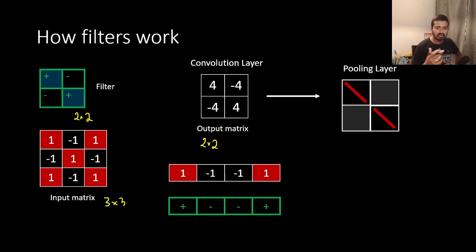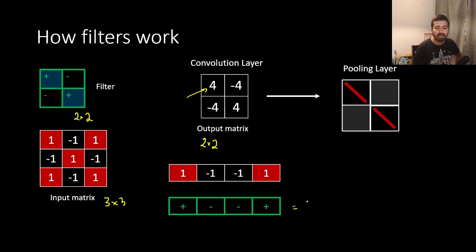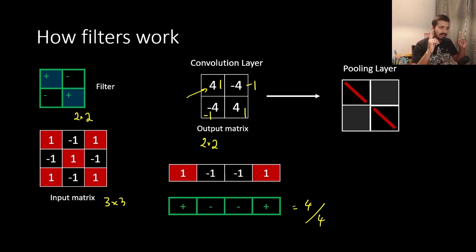For example, in computer science, the number of pixels is different from the total number of pixels. So this matrix is 1, minus 1, minus 1, minus 1, minus 1. So this is 1, minus 1, minus 1, minus 1. Anything other than 1 is not 1. So this is the logic of this.